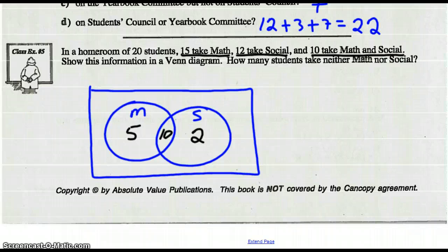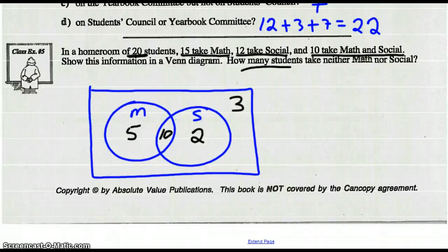So if I look at the idea that there are 20 students in the homeroom, there are a total between math and social. If I add up those 5, 10, and 2, we get 17. So the number that are not taking math or social should be three outside. We can now answer this question: how many students take neither math nor social? Three students.